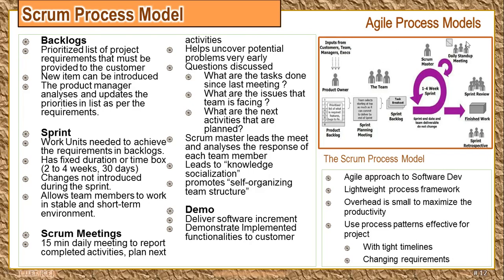After the sprint, there are daily reviews to find out whether best practices, proper documentation, and proper coding have been followed. After the work is finished, it is shown to the client or reviewed by stakeholders. Then a new feature is selected, broken down for completion in the next 30 days, and this cycle continues until the whole software development is done. The Scrum model is a lightweight process that maximizes productivity, with work done in the form of packets.